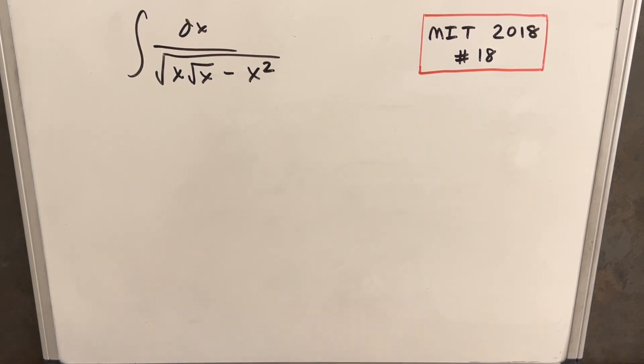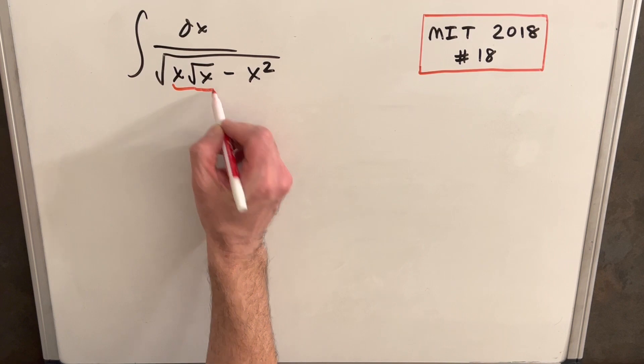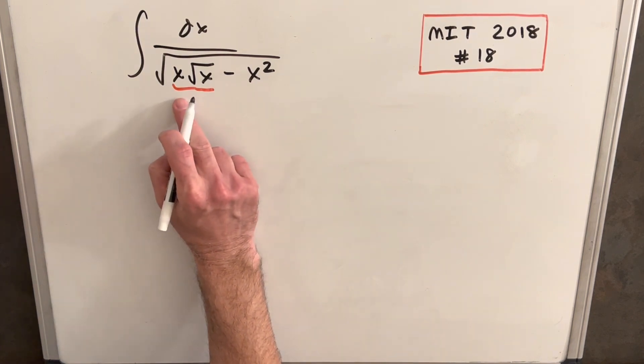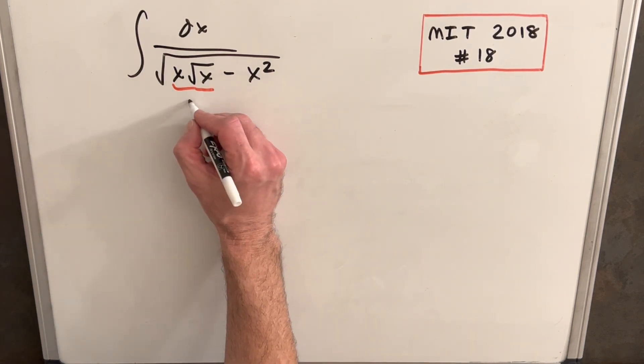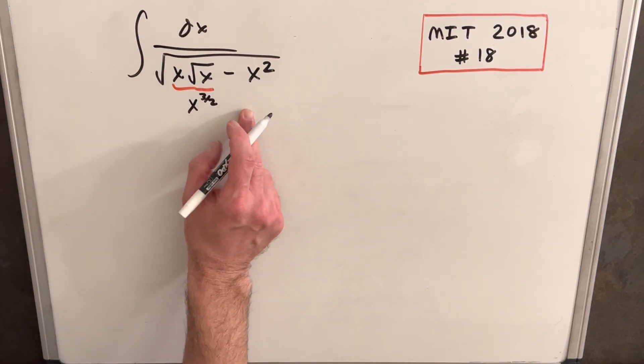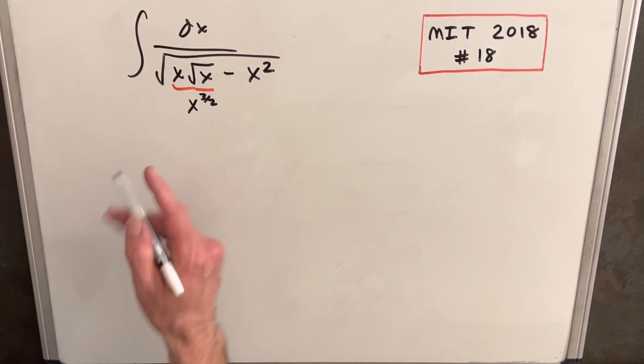Okay, the first thing, they're kind of overcomplicating it here by writing it this way. What we can do is just write that all this is x to the 1 times x to the 1 half. Adding exponents, this is just x to the 3 halves. So let's just rewrite this in a way that we are a little more comfortable with it.